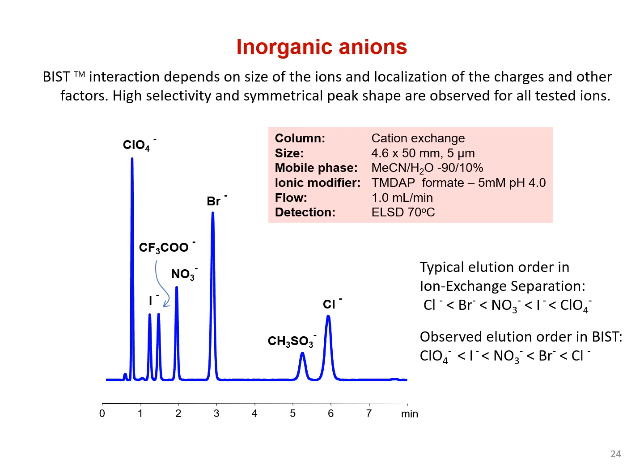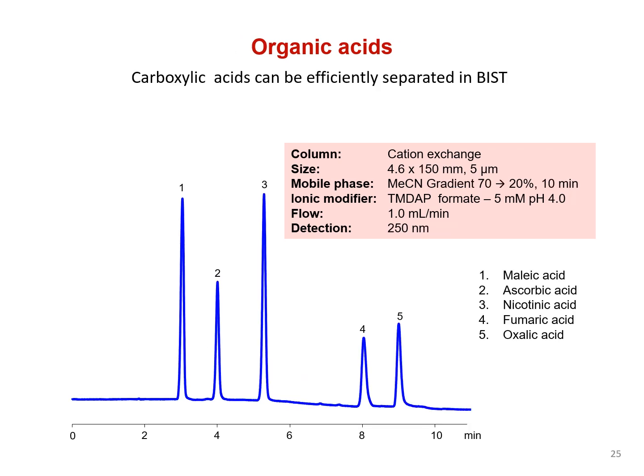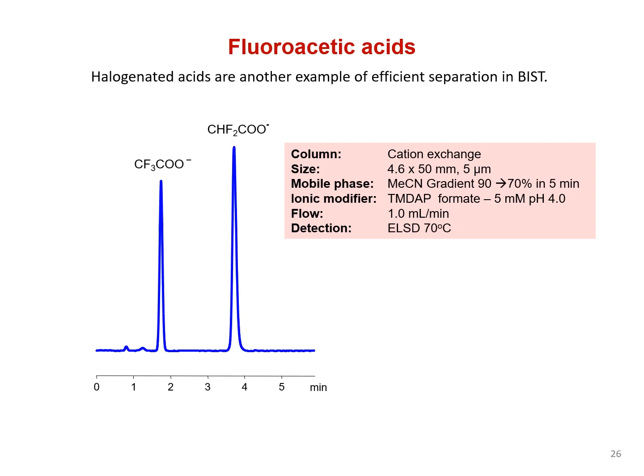This offers a unique opportunity to analyze mixtures that are traditionally difficult to analyze via ion exchange. BIST can exploit slight differences in similarly structured organic acids to generate retention with high selectivity. Another example of BIST separation of similarly structured compounds, this time with fluoroacetic acid on a short column. Because the mobile phase is comprised of volatile TM-DAP and formic acid, phase change detectors such as ELSD, CAD, and mass spec can be used.